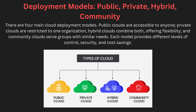Cloud computing offers four main deployment models to cater to different use cases: public, private, hybrid, and community cloud. A public cloud is available to any user over the internet, with resources managed by a third-party provider like AWS or Google Cloud. In contrast, a private cloud is exclusively dedicated to one organization, providing enhanced control and security, often hosted on premises.